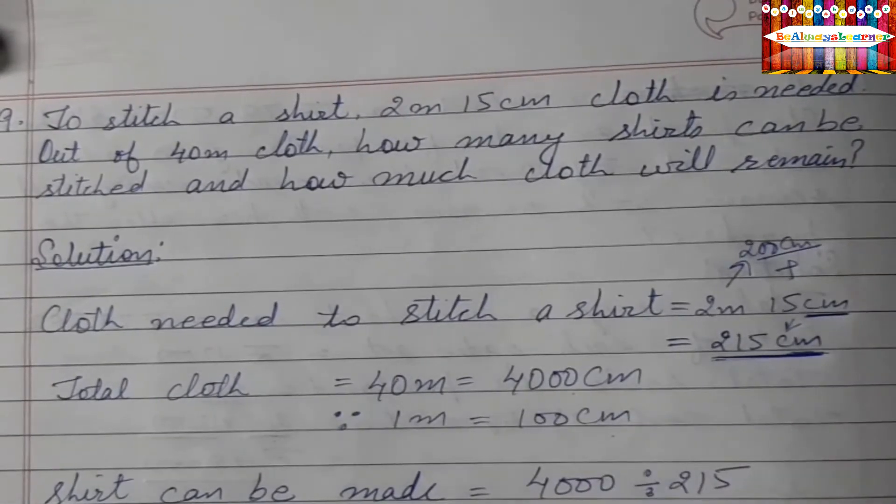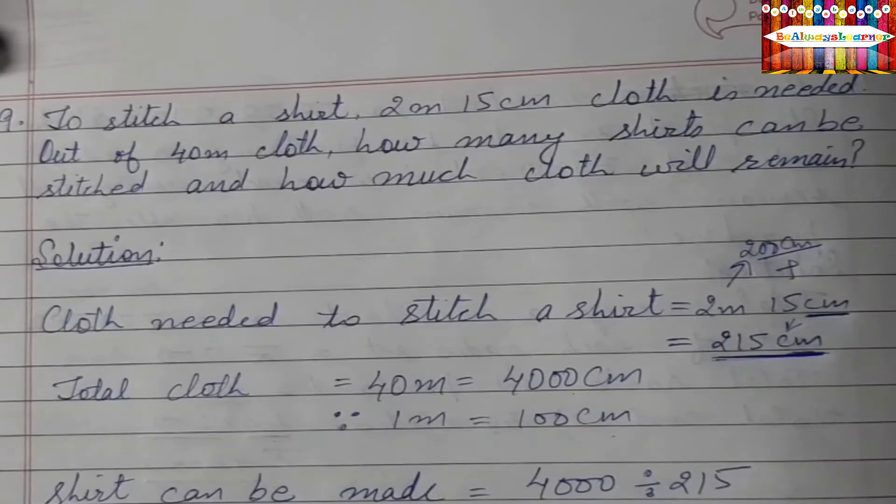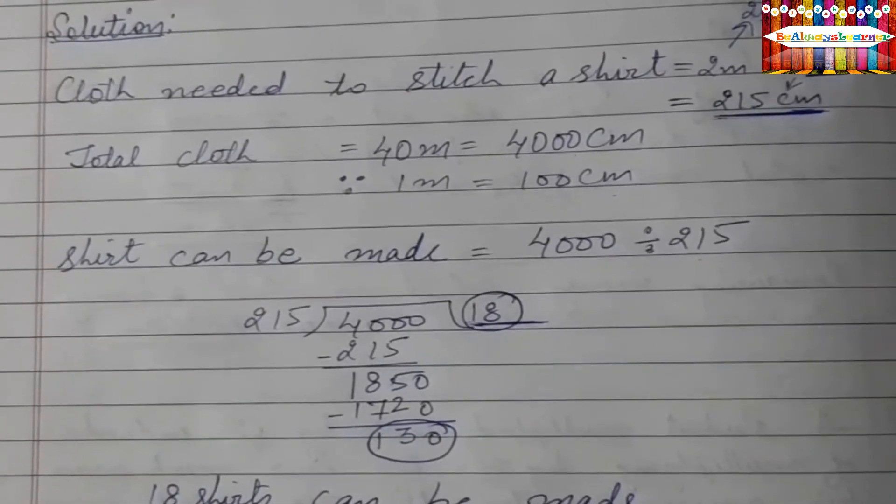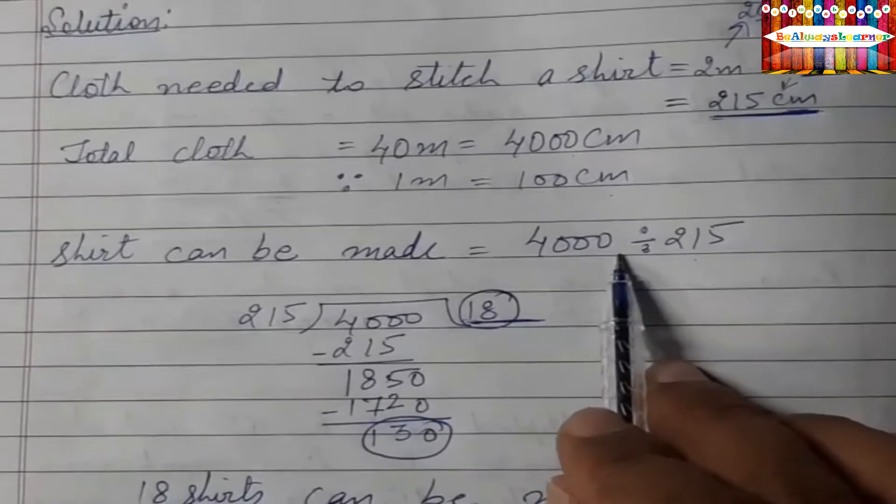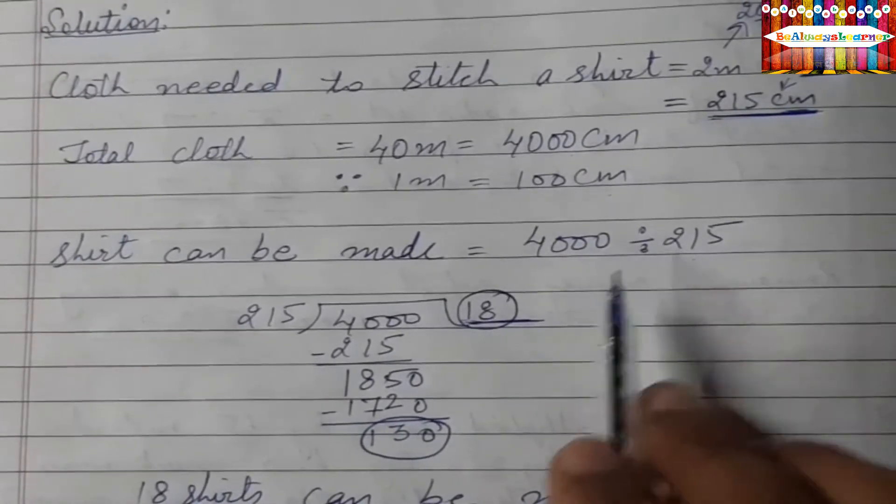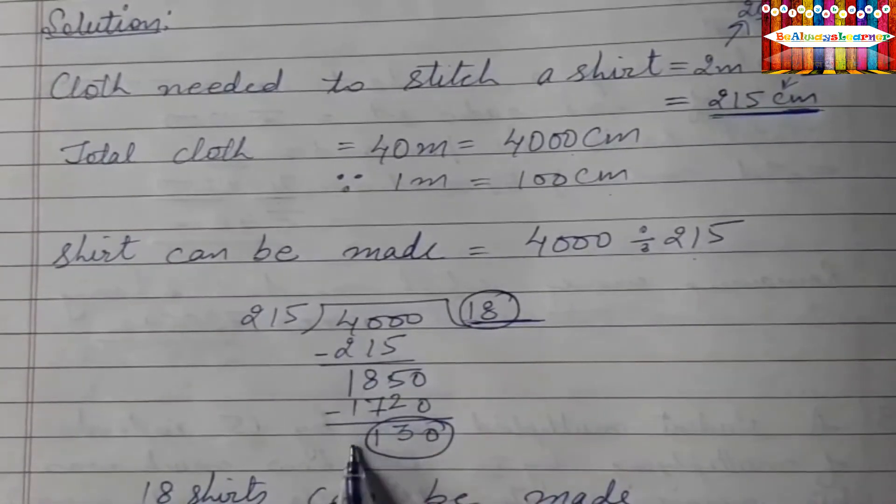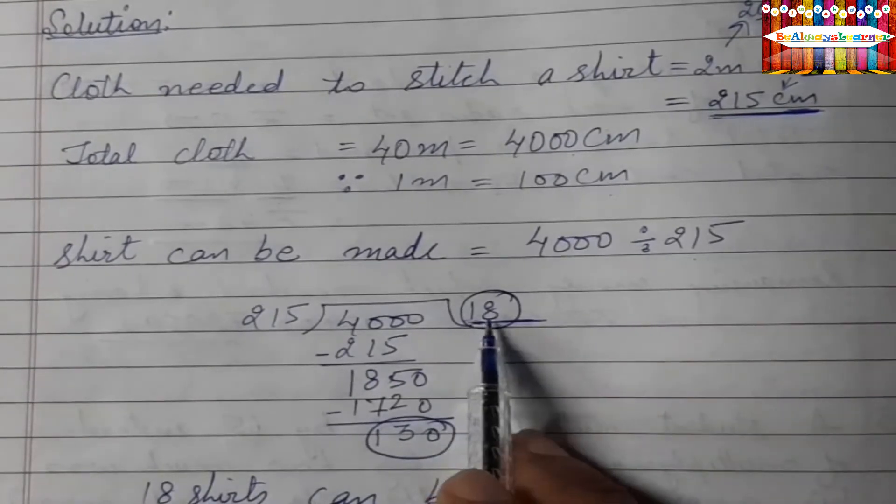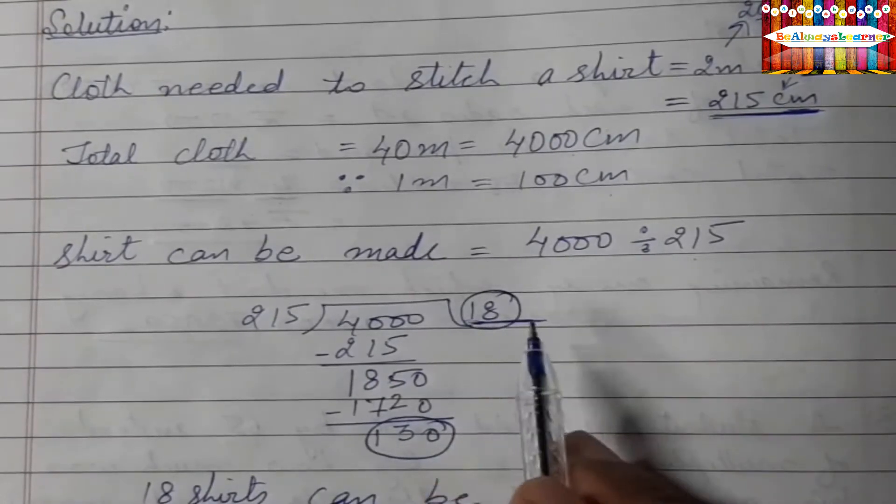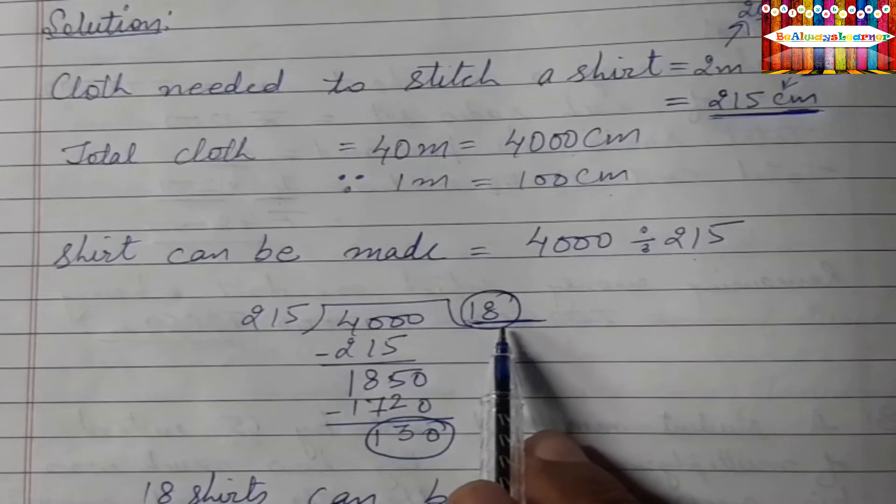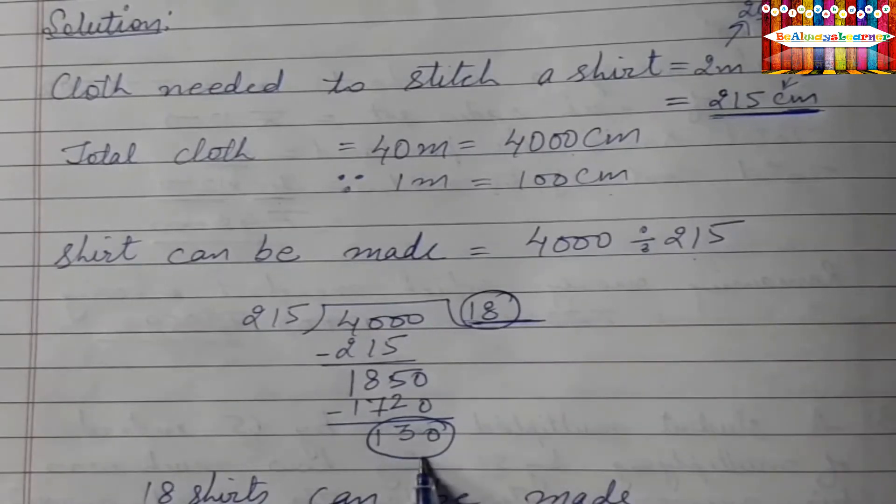And the next is shirt can be made, that is 4000 divided by 215cm. So we have divided it, you can see rough work. We have not shown, so we have 18 shirts will be made in 40m and that is 130cm.